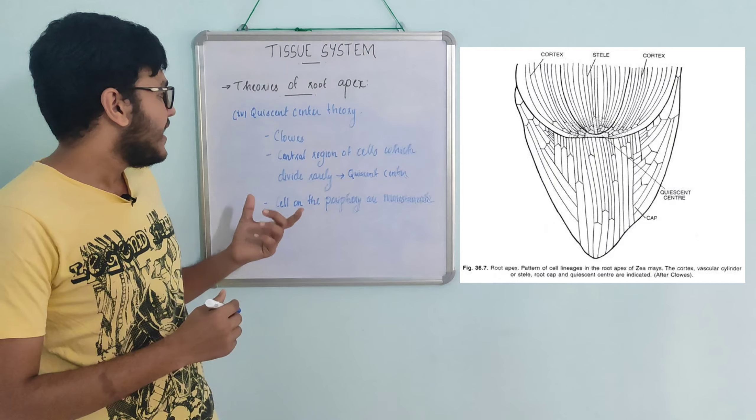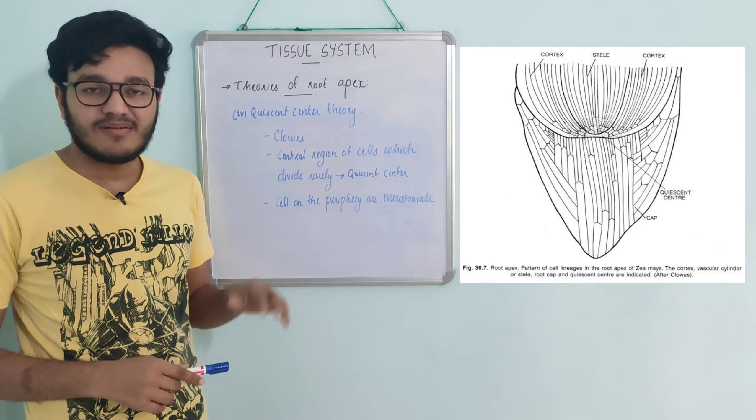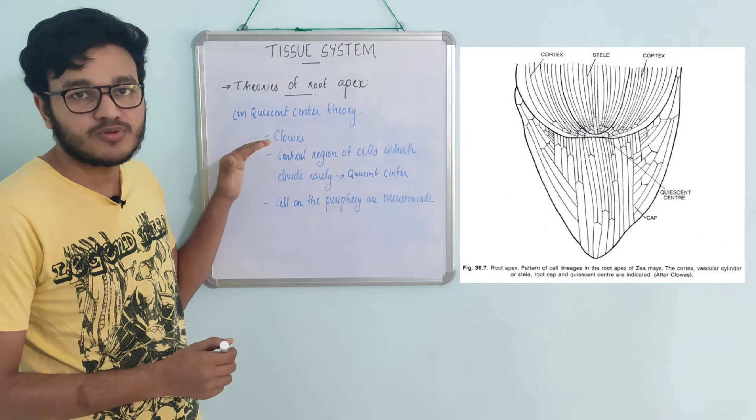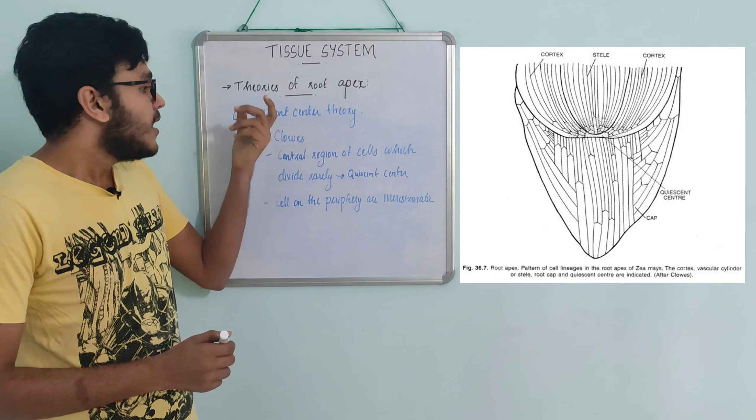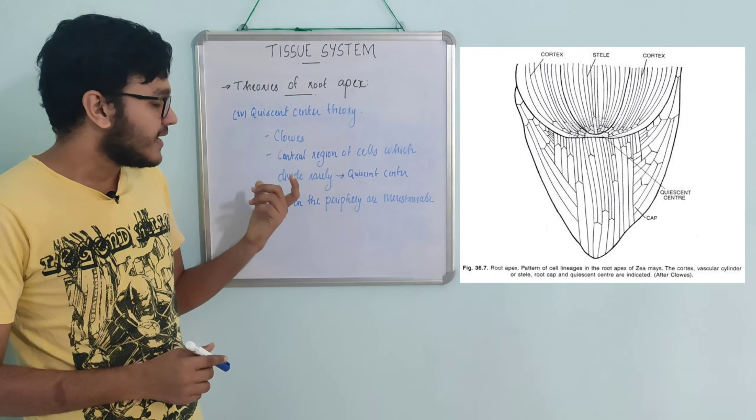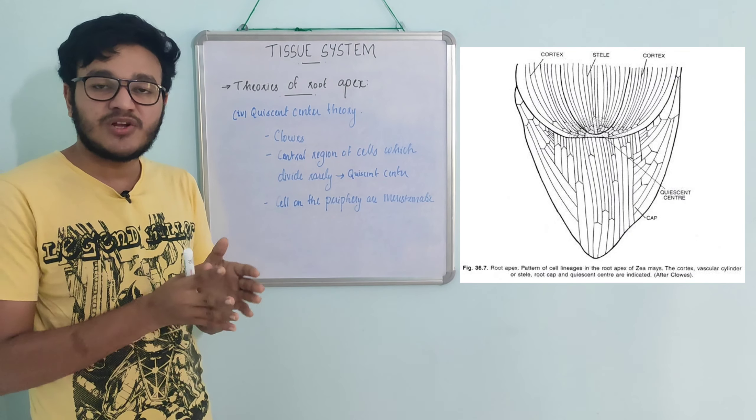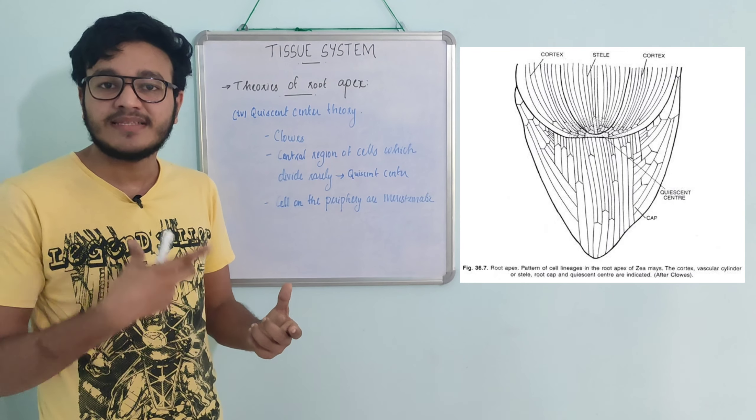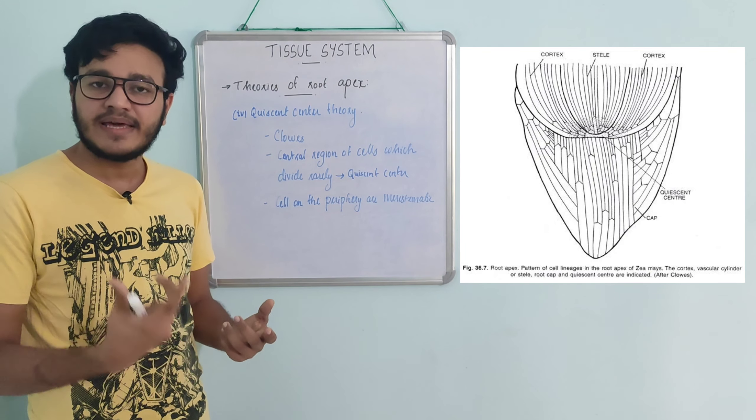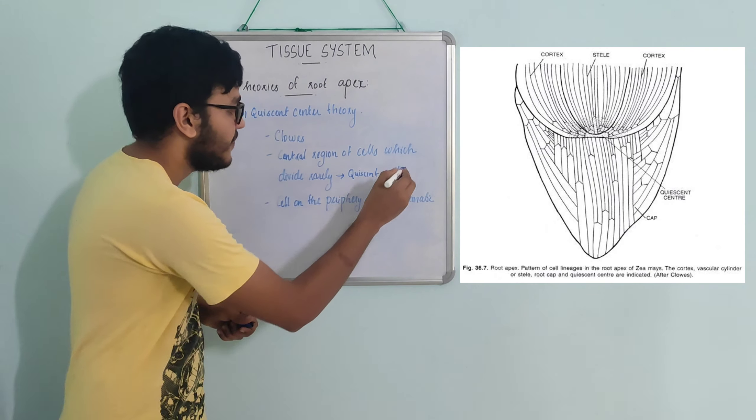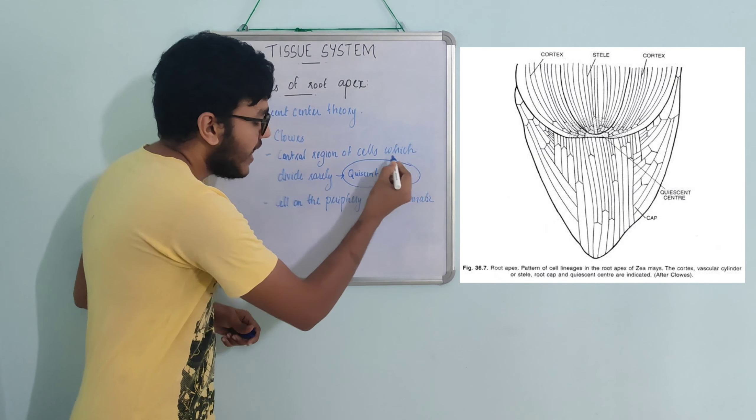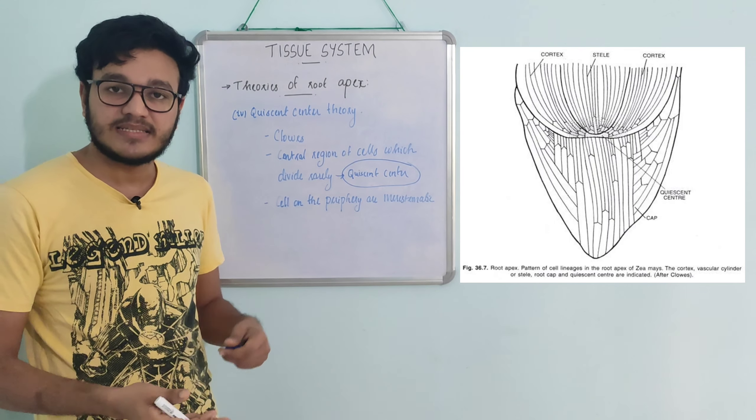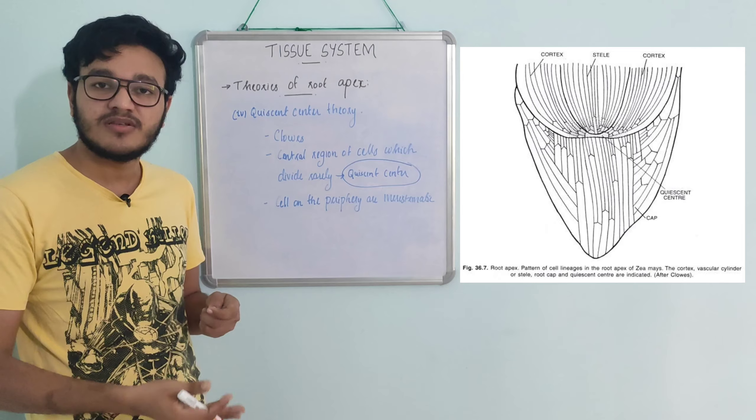The fourth theory involves the quiescent center, proposed by Clowes. The quiescent center is a central region of cells in the root apex where mitotic divisions are very rare or inactive. In contrast, the peripheral layers surrounding this center show active mitotic activity. This organization is important for root apex growth.